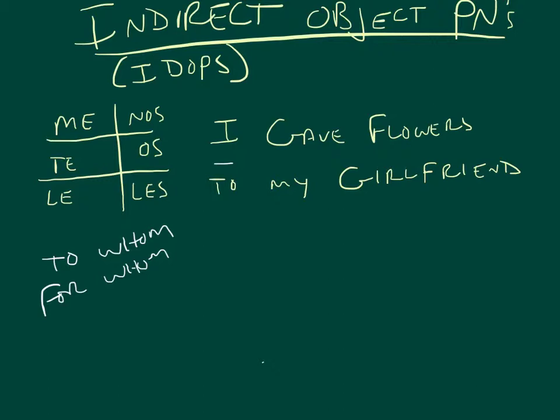The verb is gave. What did I give? Flowers. Flowers, that's the direct object. That's the direct object noun, it's what I gave.